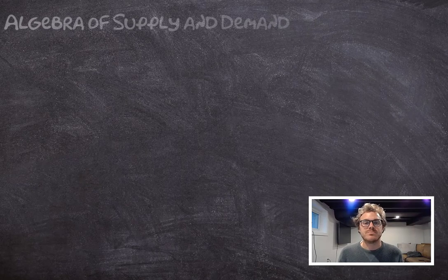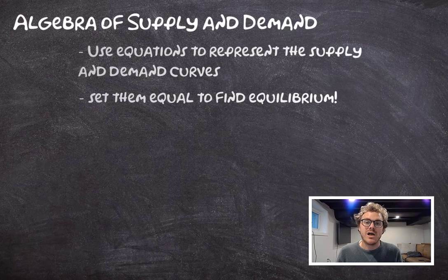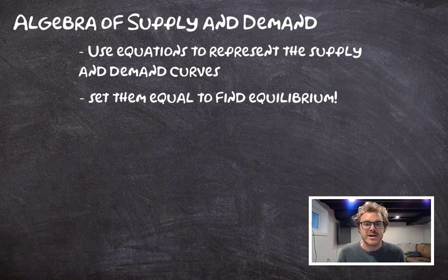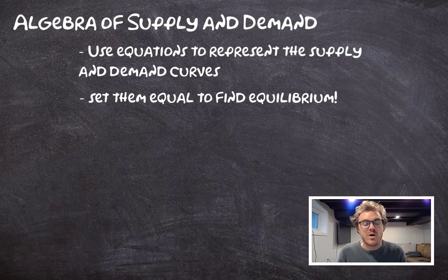The final topic in this module is the algebra of supply and demand. We can use an equation for a line to represent both the supply curve and the demand curve. We write quantity demanded as a function of price with a negative coefficient in front of price to represent the law of demand. The supply curve is quantity supplied as a positive function of price — the higher the price, the greater the quantity supplied. Setting those two equations equal lets us find where the two lines cross, giving us actual numbers for equilibrium quantity and equilibrium price.